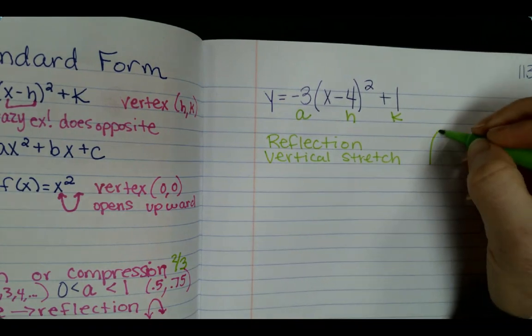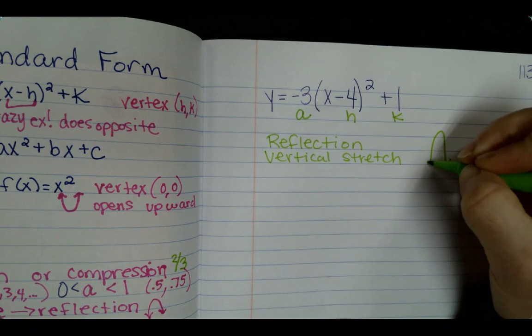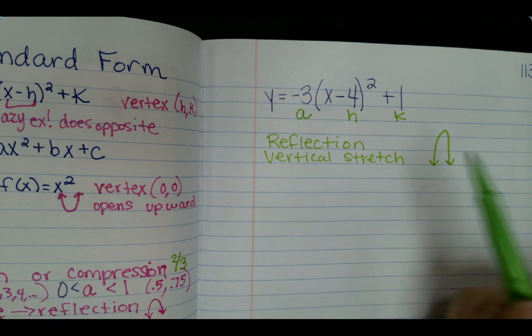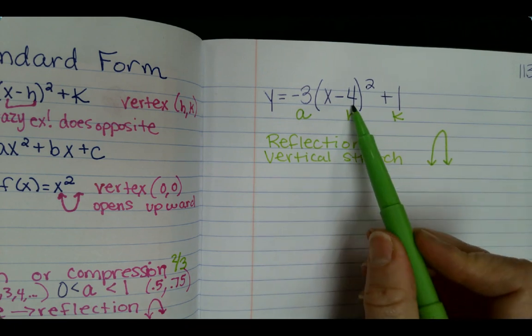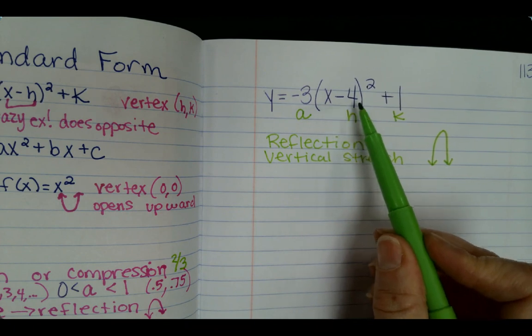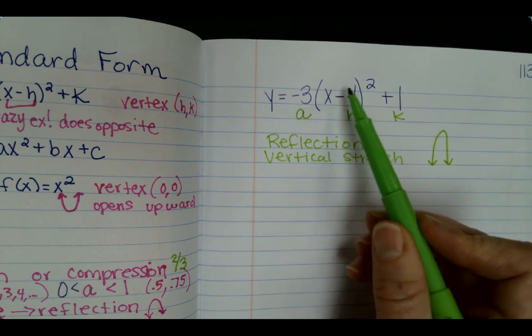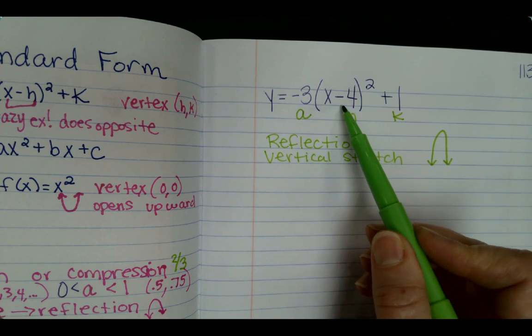So it's going to be a reflection and it's going to be a stretch. And then we can also look at our h and our k. So h, because it says x minus 4, so it's the crazy ex because it's inside the parentheses, so it does the opposite of what you would think.